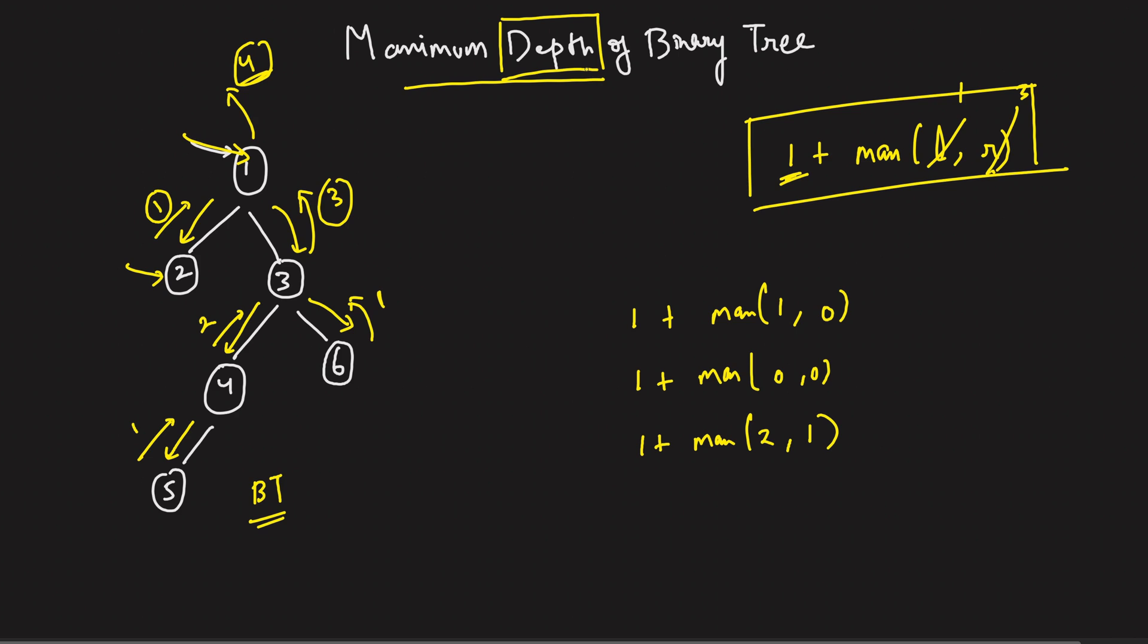So if you carefully observe this, we're actually traversing all the nodes, right? So we cannot improve this because we have to find out the maximum depth. So you have to ultimately go through all the nodes, that cannot be avoided.